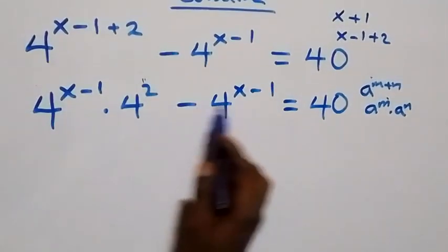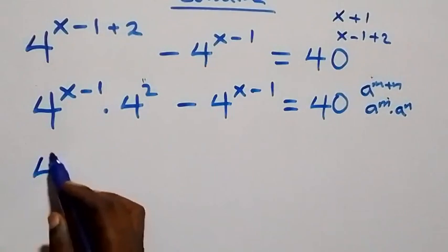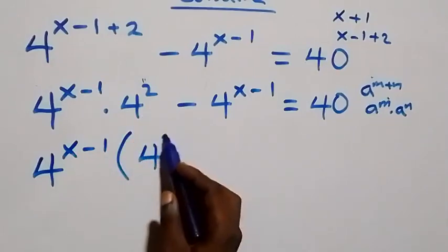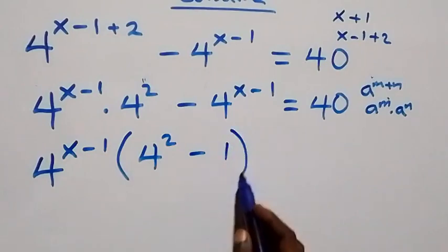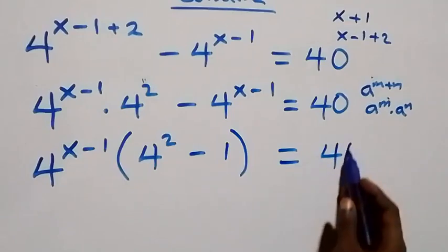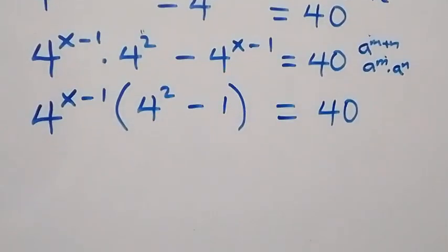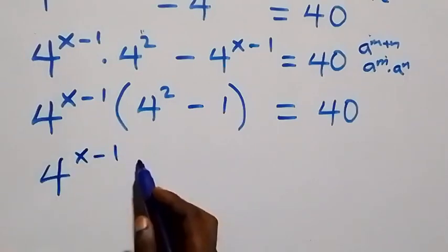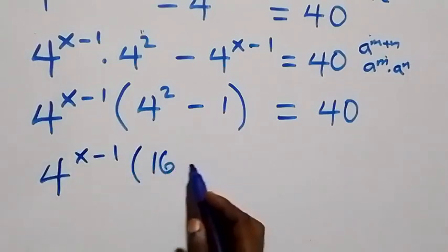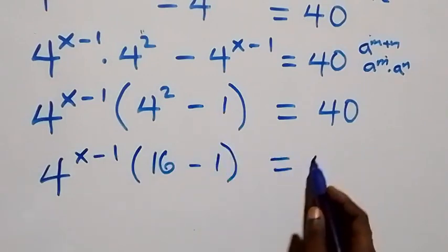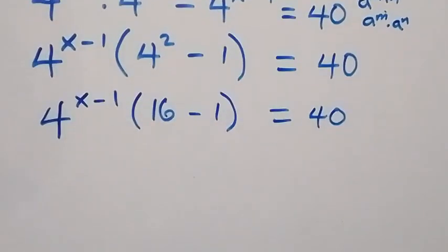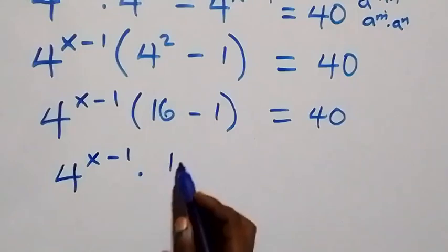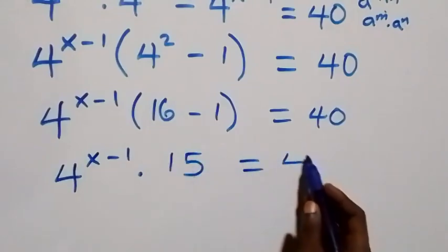Here we have 4 raised to power x minus 1 common. We factor it out and we have 4 raised to power x minus 1 into bracket. Here we have 4 squared minus 1 left, then equals 40 from here. This is the same as 4 raised to power x minus 1 into bracket: 4 squared is 16 minus 1, equals 40. That is the same as 4 raised to power x minus 1 times 15, then equals 40.